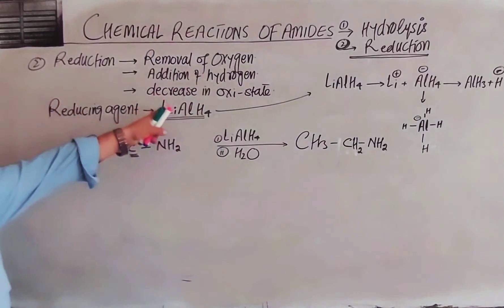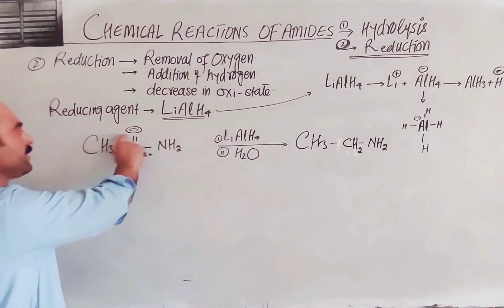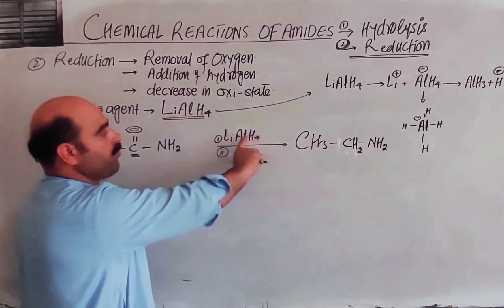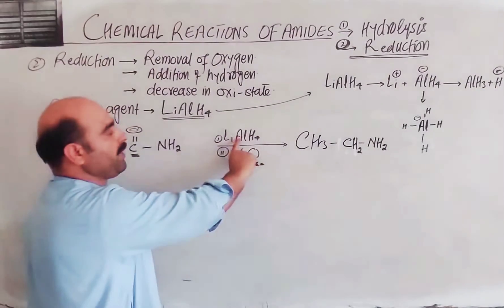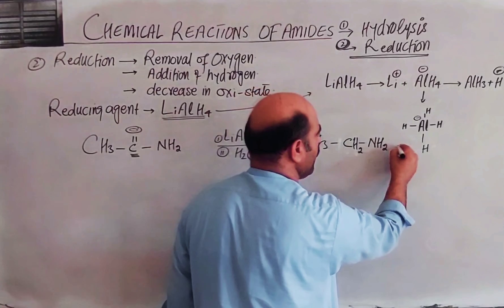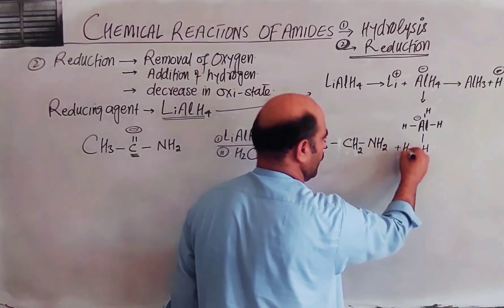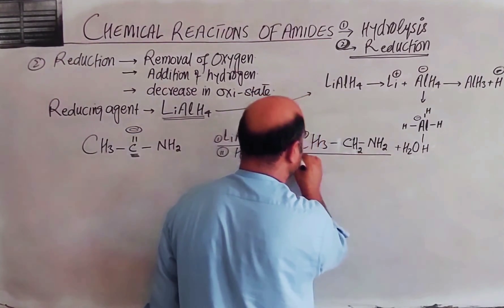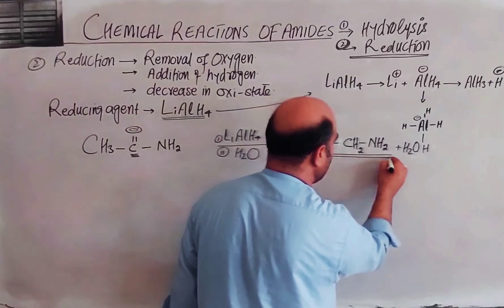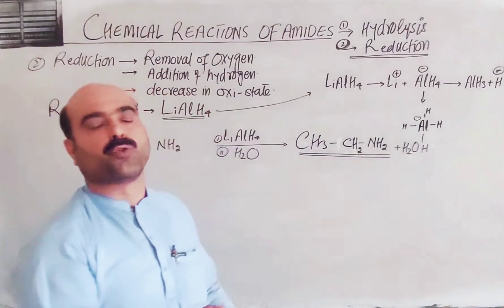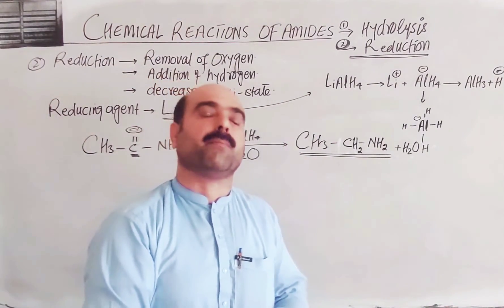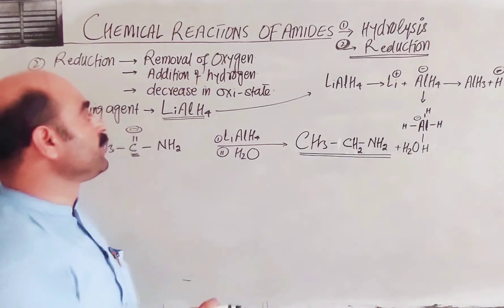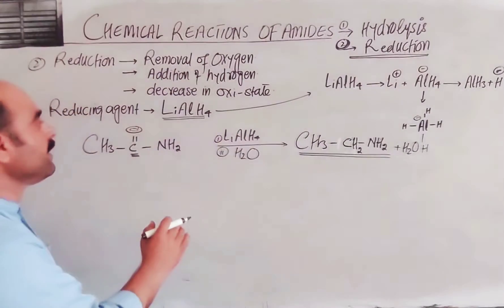When oxygen is removed and hydrogen is added during the reduction, this means the preparation of an amine. In other words, the preparation of amines is done by the reduction of amides. The mechanism gives a clear shortcut.